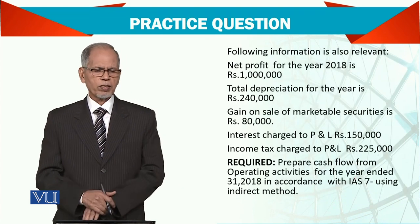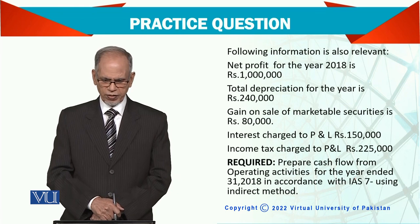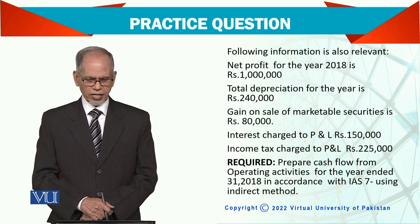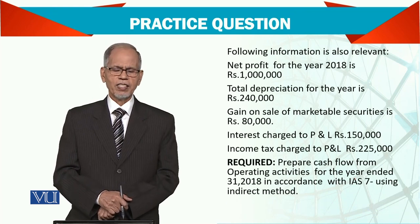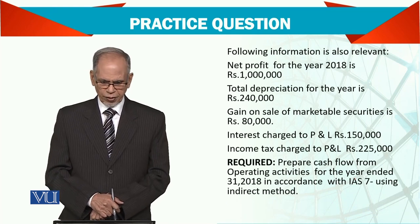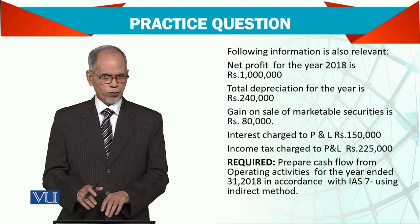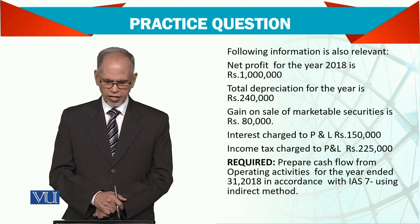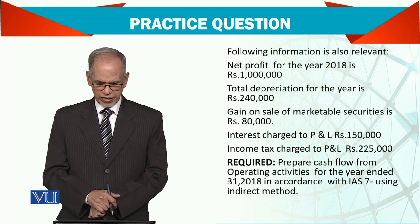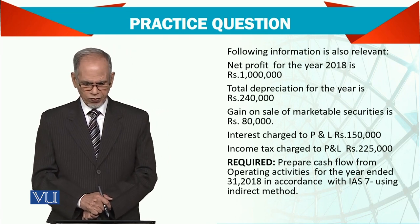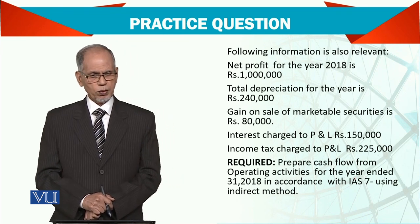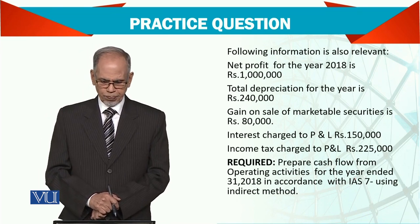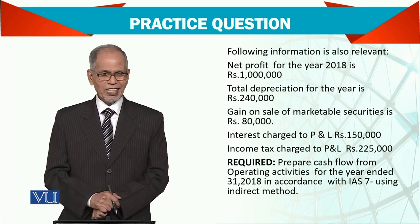And then there is some small additional information which is also relevant. Net profit for the year — the income statement is not there, so the profit for the year given is 1 million. The depreciation for the year is 240 million. Then gain on sale of investment securities is 80. Interest charged to profit and loss account is 150. Income tax charged to profit and loss is 225. You need to prepare the cash flow statement from operating activities using the indirect method.